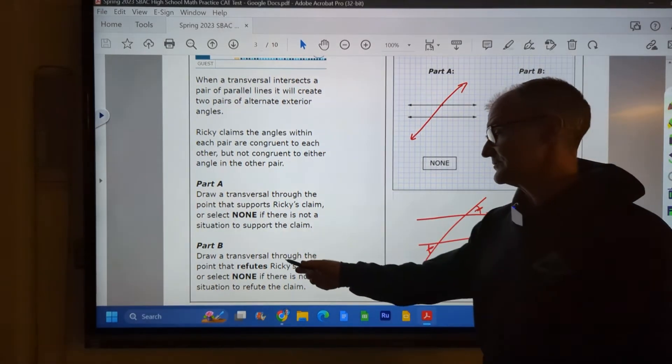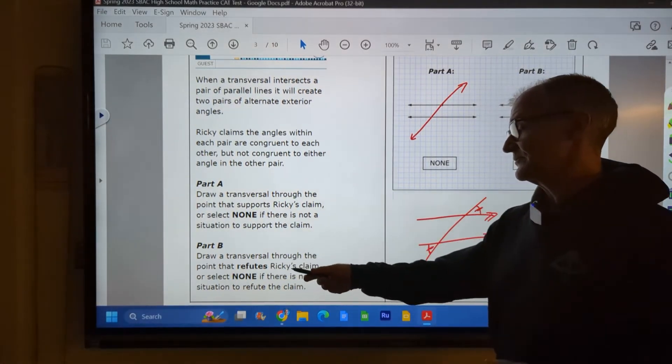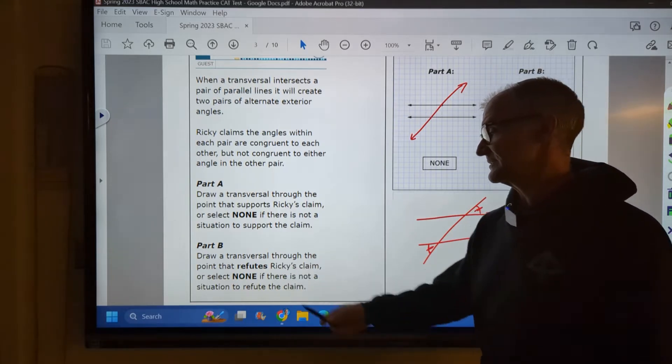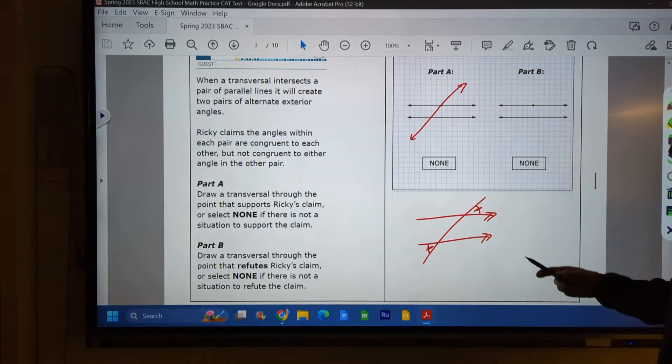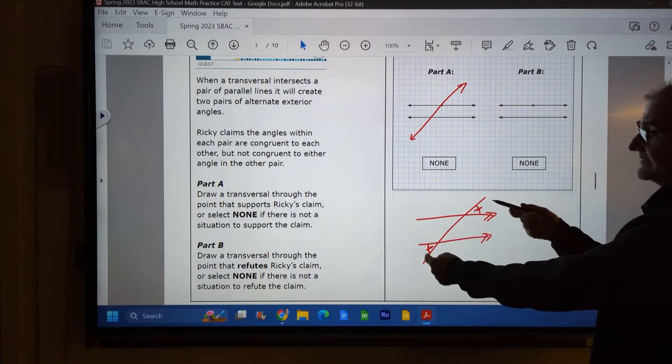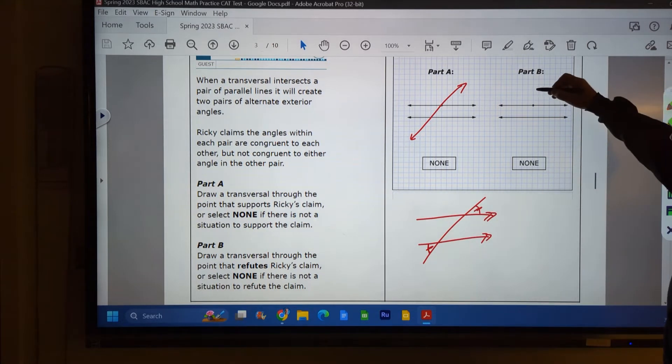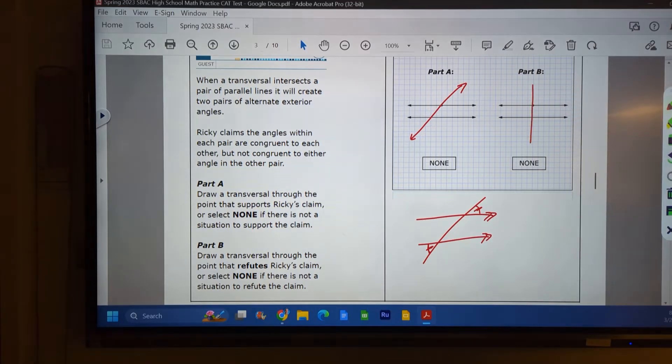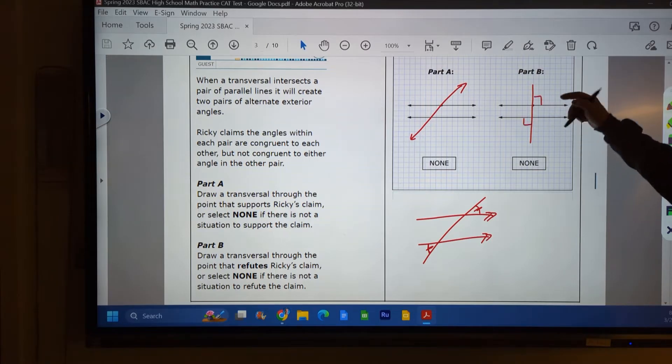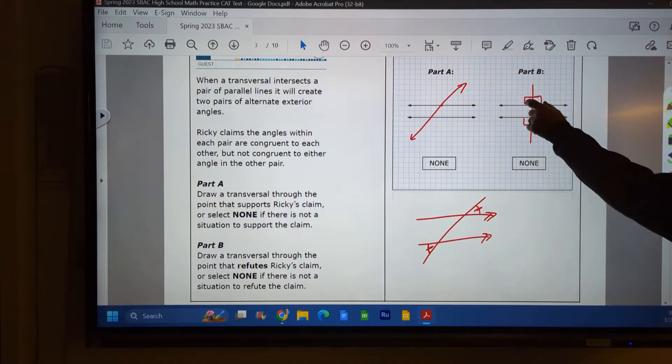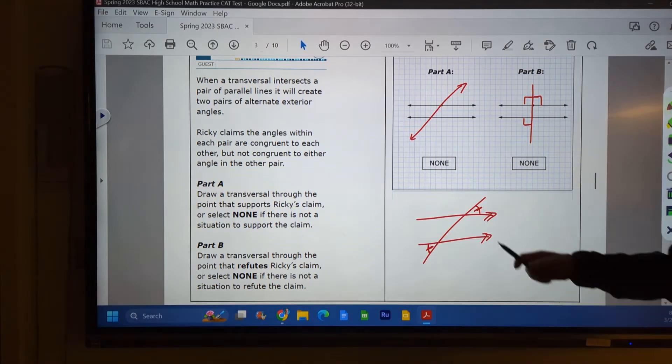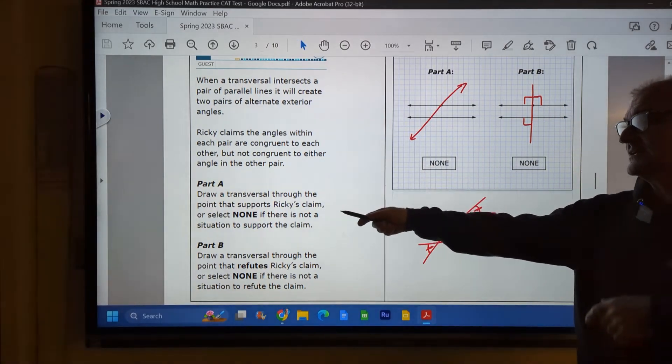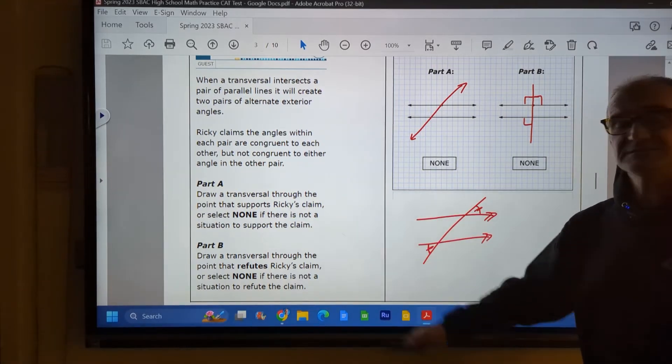Part B, draw a transversal through the point that refutes, refutes means opposes Ricky's claim, or select none. Well, what I want is I want to say that these two are congruent, and these two are congruent, and the only way that's going to happen is a perpendicular line. So I draw my transversal perpendicular. This would be right. This would be right. They would be congruent. This linear pair would also be right, right? Because they add up to 180, and they would be congruent. So this is a case for part A that shows he's right, and this is disproving his claim.